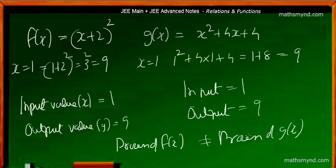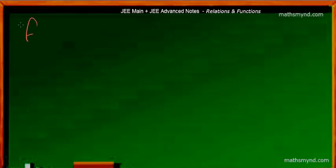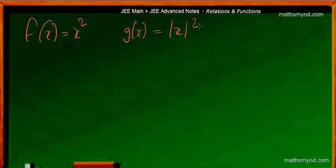Even though the processes are different, in a manner they are the same because the expression of g of x — that is x squared plus 4x plus 4 — is simply the expansion of x plus 2 the whole squared. Now let us look at another case. Suppose we are dealing with f of x is equal to x squared, and g of x is equal to the absolute value of x, the whole squared.